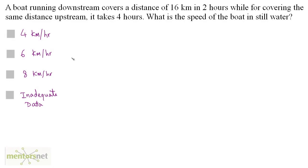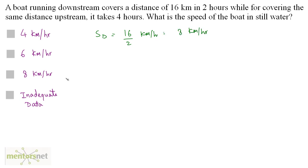A boat running downstream covers a distance of 16 kilometers in 2 hours, while for covering the same distance upstream it takes 4 hours. What is the speed of the boat in still water? So the boat running downstream covers a distance in 2 hours, so the downstream speed is equal to 16 by 2 kilometers per hour, and that's 8 kilometers per hour.